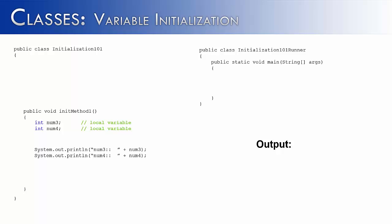In order to test the initMethod1, we're going to have to create an object of the initialization101 class. And we've done that, and we've called it init. And now we want to use the method. So we say init.initMethod1. And what that's going to try to do is print out num3 and num4.